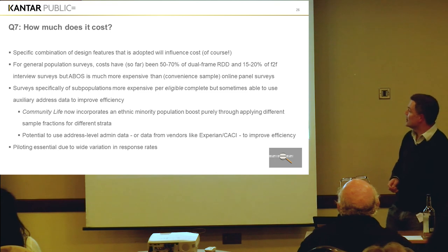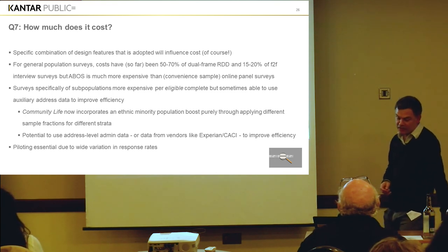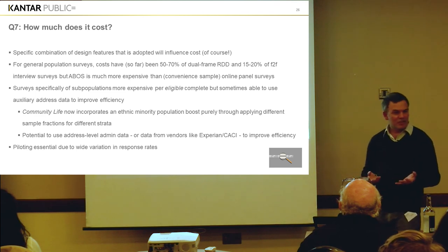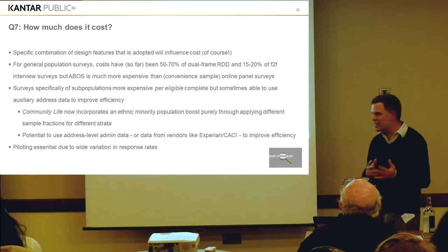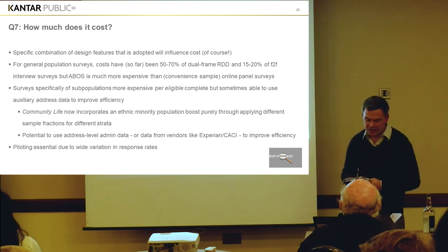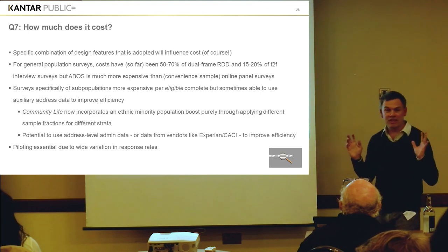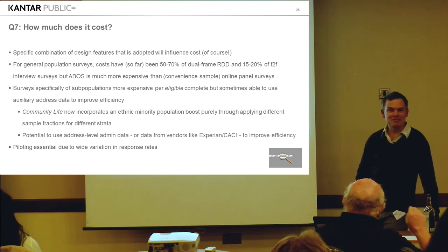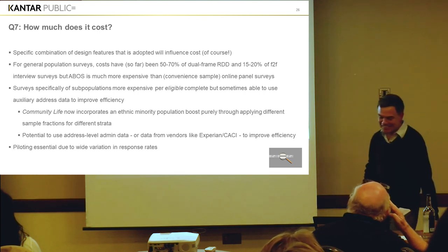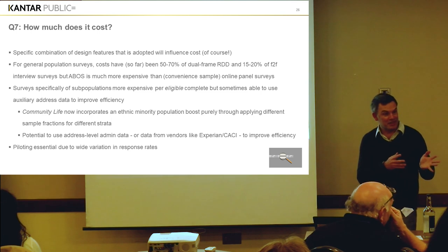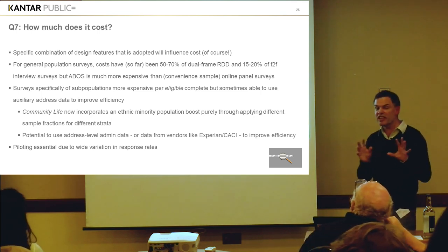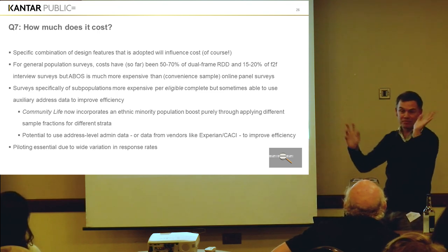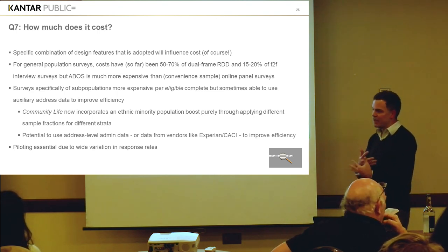And the very final question: how much does it cost? Obviously the specific combination of design features adopted will influence cost. But for general population surveys it seems to be about 50-70% of the cost of an RDD survey, and about 15-20% of the cost of a face-to-face interview survey done randomly. But they're far more expensive than using convenience samples — YouGov and similar have costs around £5 per complete, whereas ABOS is several times more expensive than that. So you are spending money on getting random sampling. There are certain things ABOS can do that panels can't — you can't target a hyperlocal area with a panel, for instance — but mostly panels have a little bit greater flexibility.